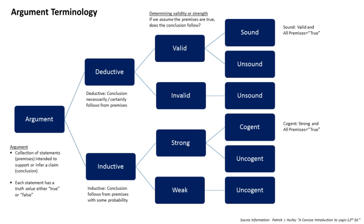In determining validity, the structure of the argument is essential, not the actual truth values. For example, consider the argument that because bats can fly, and all flying creatures are birds, therefore bats are birds. If we assume the premises are true, the conclusion follows necessarily, and thus it is a valid argument. Deductive arguments are sometimes referred to as truth-preserving arguments. If a deductive argument is valid and its premises are all true, then it is also referred to as sound; otherwise, it is unsound, as in the bats are birds example.